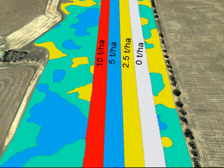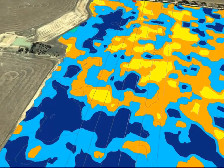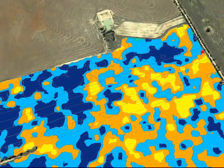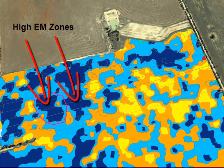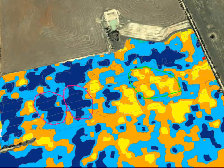We are going to use an EM soil survey map to define our trial zones. In this case, we have two high EM zones on the left hand side indicated by the red polygons, and one low EM zone indicated by the green polygon on the right hand side. Once we have identified these, we can simply work with the trial outline and our zone outlines.